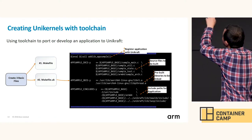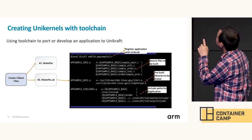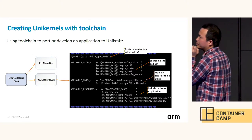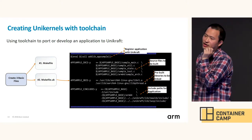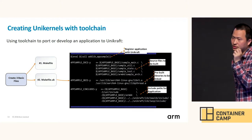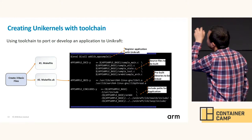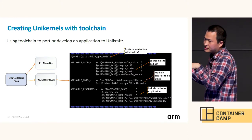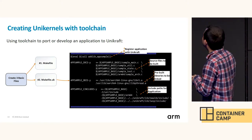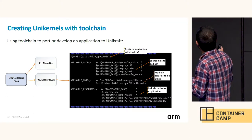From this example, we can see that in the first section, we use a UniKraft predefined function, adlib, to register our application to UniKraft. The second section is the source file list that will be compiled for the UniKernel application.